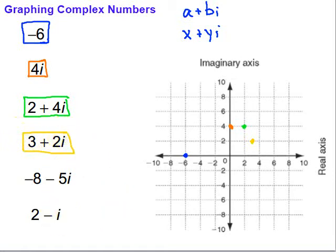Then, let's take a look at this next one. Negative 8 minus 5I. Well, for that one we're going to go negative 8 on the reals. So back 8. And then negative 5I, it's going to take me down 5, it's going to put me right there.